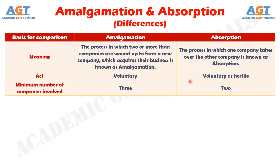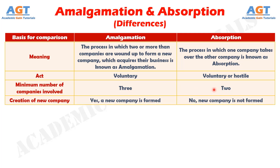Number 3: In amalgamation, there are minimum three companies involved — that is, two amalgamating companies and one new company which is formed by the fusion of the two companies. Conversely, in absorption, only two companies are involved.